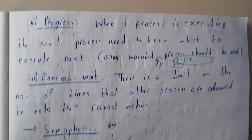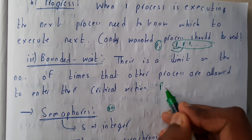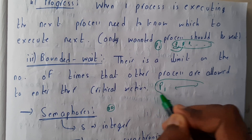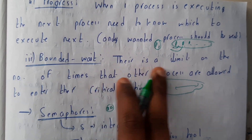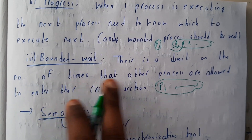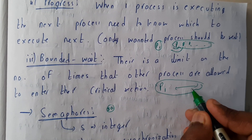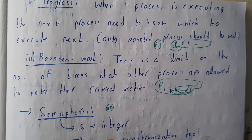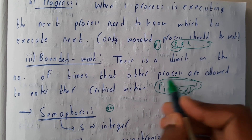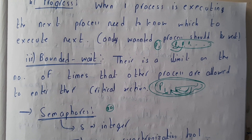That is nothing but progress. The third rule is bounded wait. When discussing processes, we talk about waiting time and starvation — this is related to that. There is a limit on the number of times other processes are allowed to enter the critical section. If a process is entering again and again, other processes are going to wait a long time, so those processes should not be given repeated chances. That is bounded wait.